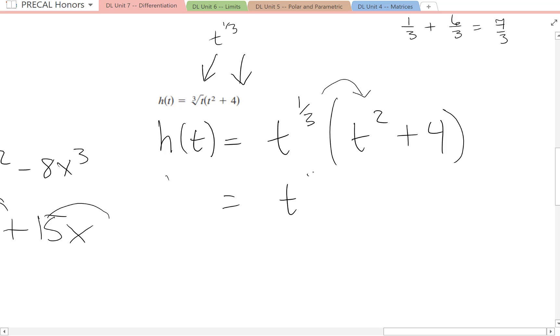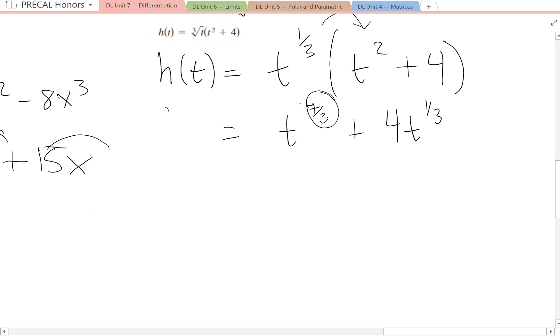t to the seven-thirds plus four-t to the one-third. Pop down, power down. To find our derivative, so this is h of t. Now this is h prime of t.